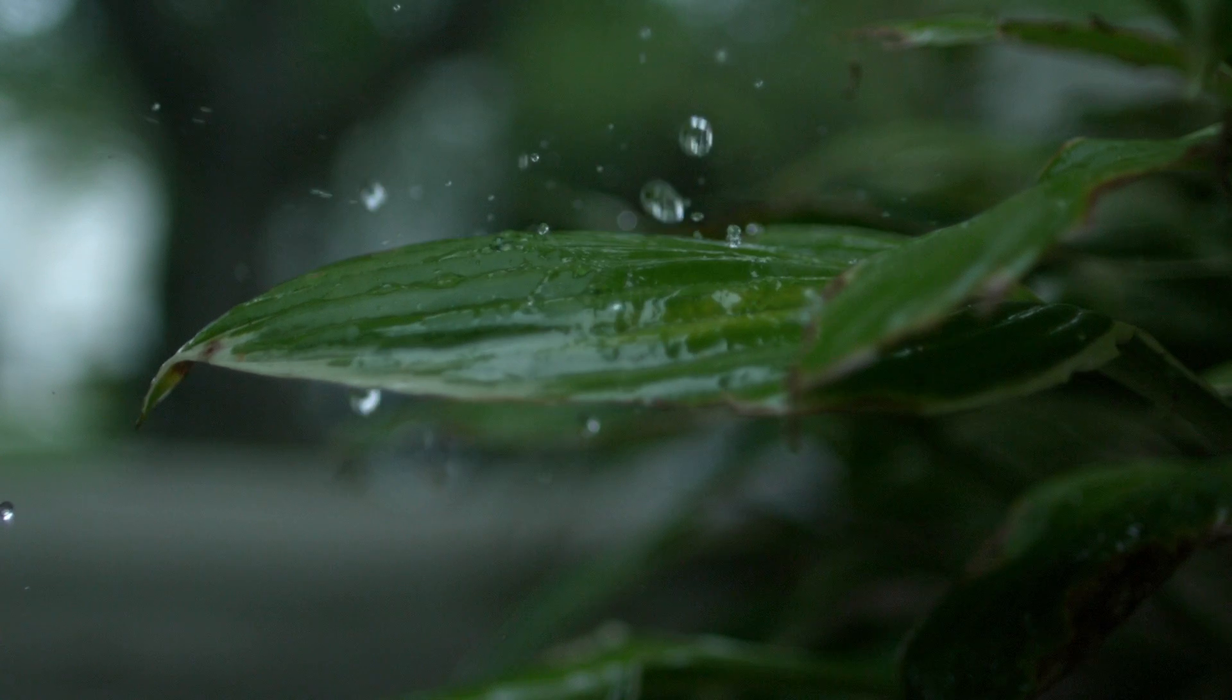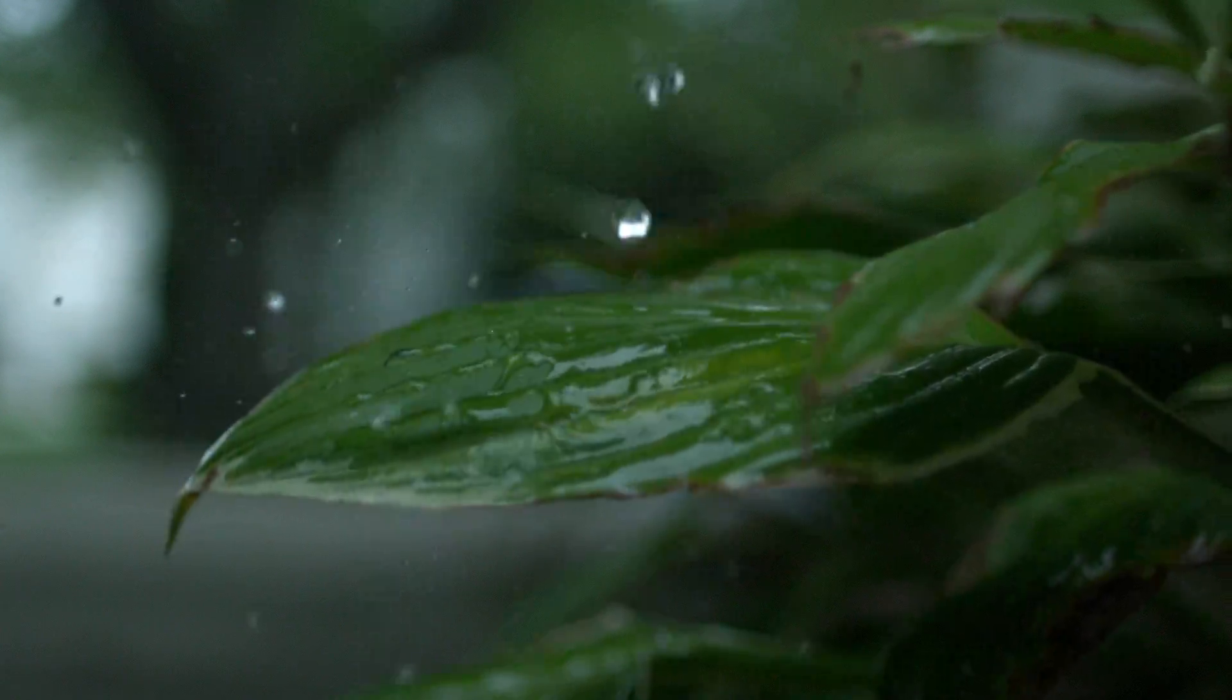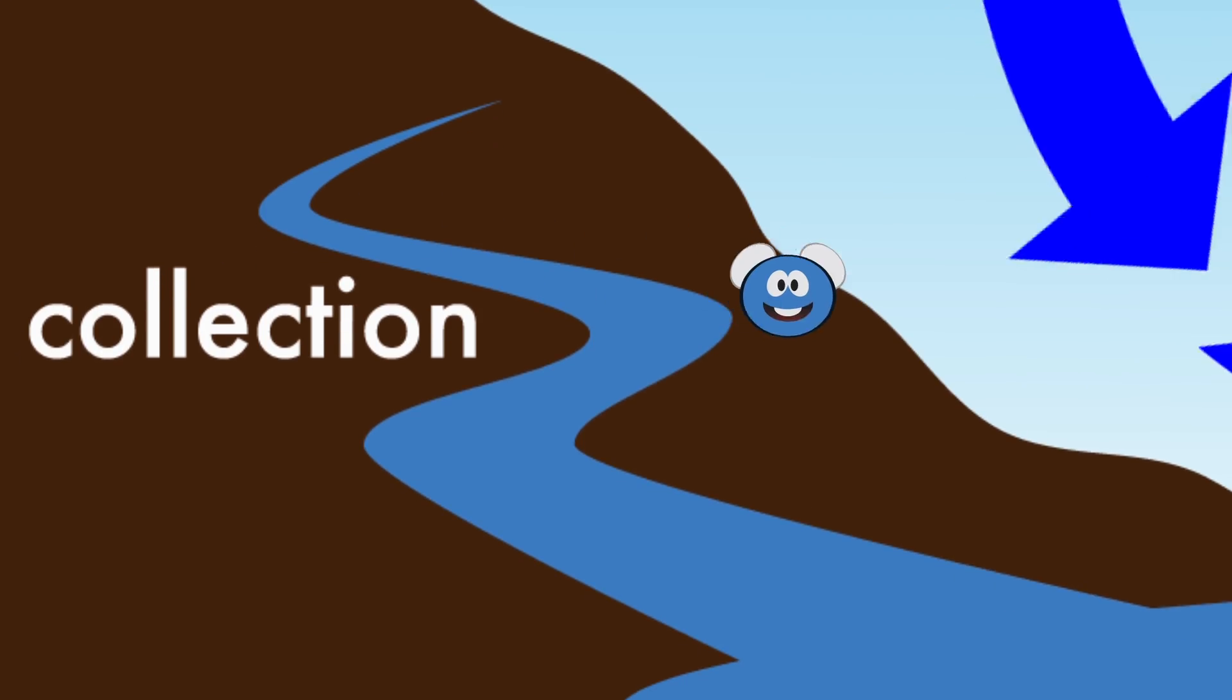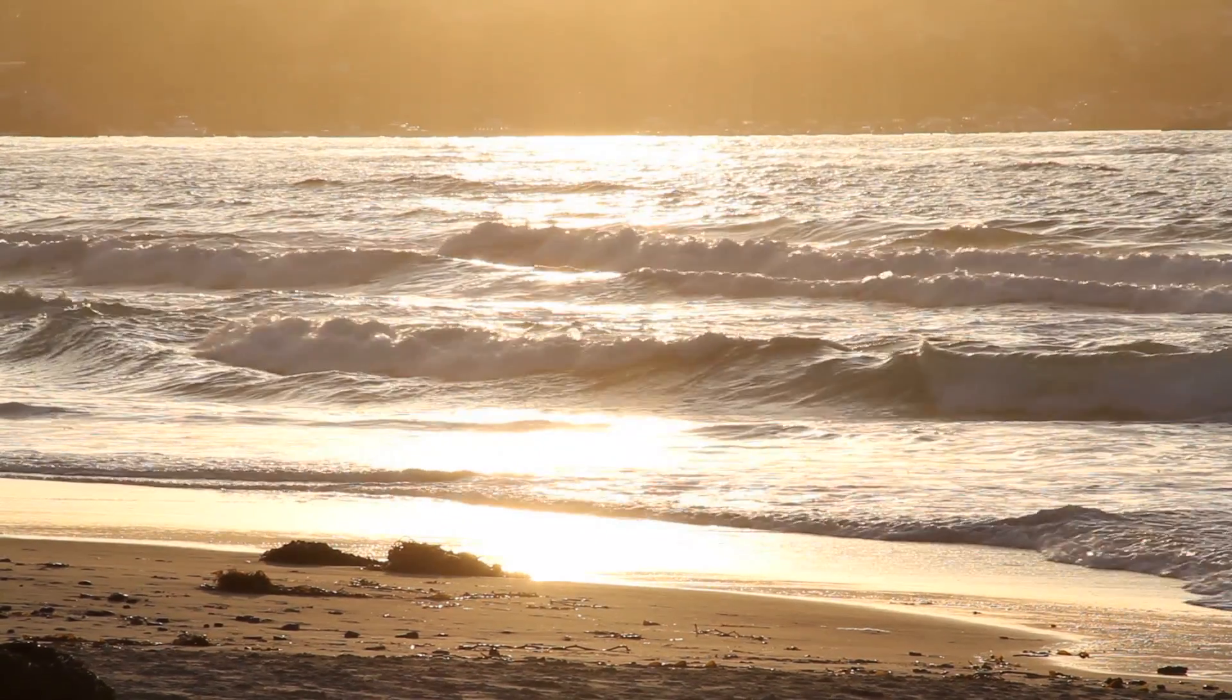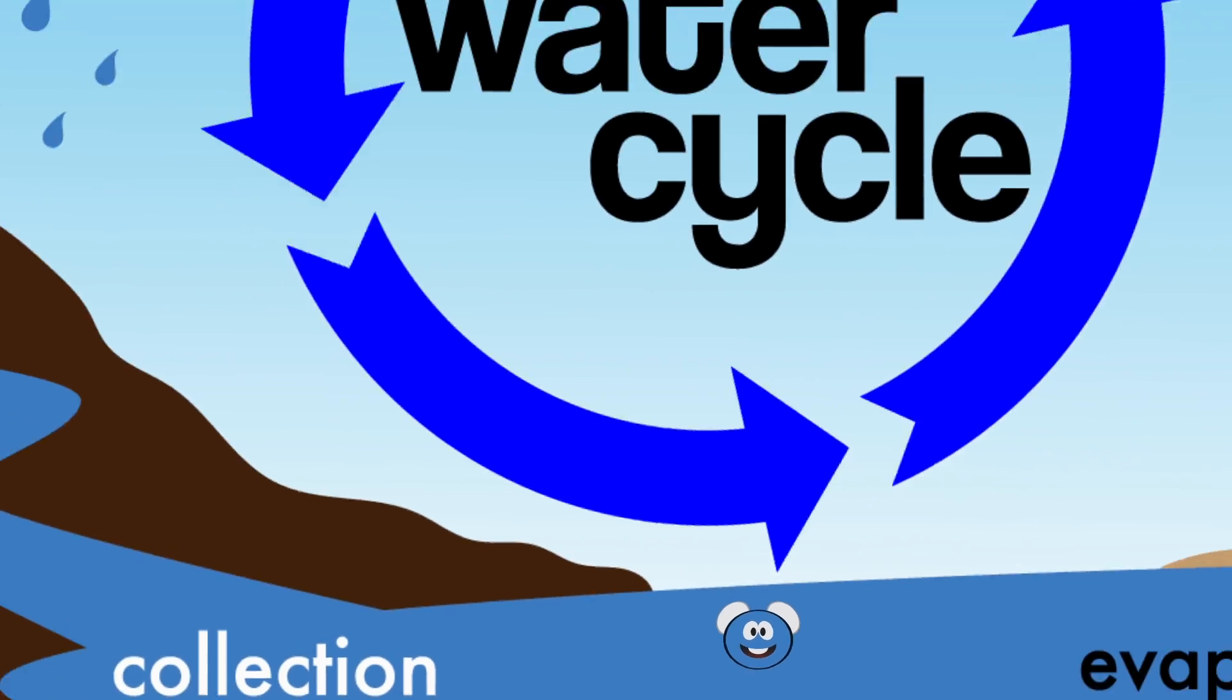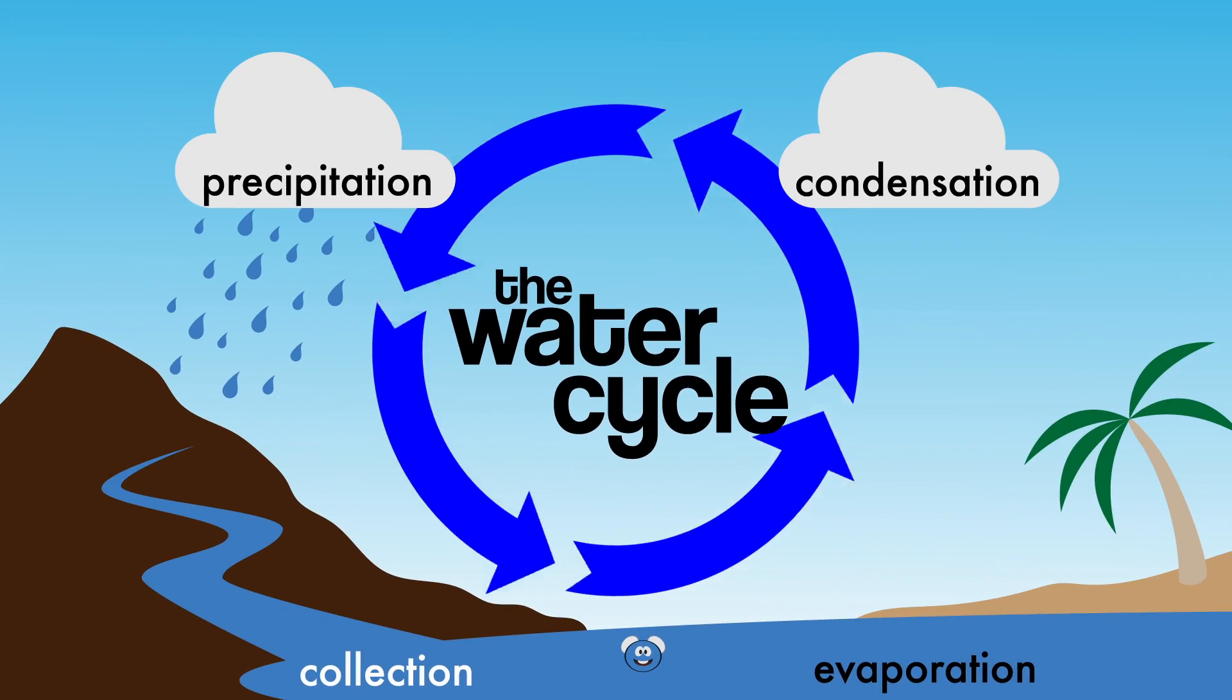But we're not done yet. We have to finish the cycle. Finally, the rain runs off the land into rivers and creeks and streams. It's eventually collected in lakes and oceans. Now it will evaporate again, starting the whole cycle over again.